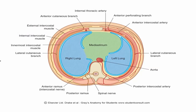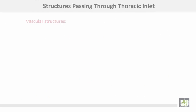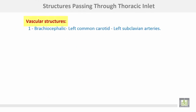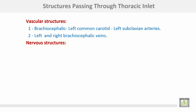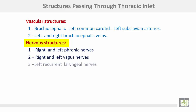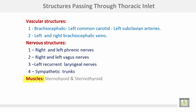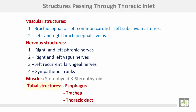On each side of the mediastinum lie the right and left lungs with their pleura. Structures passing through the thoracic inlet include: vascular structures including brachiocephalic, left common carotid, and left subclavian arteries, and left and right brachiocephalic veins. Nervous structures include the right and left phrenic nerves, right and left vagus nerves, left recurrent laryngeal nerves, and the sympathetic trunks. Muscles passing through the thoracic inlet are sternohyoid and sternothyroid. Tubal structures are the esophagus, trachea, and thoracic duct.